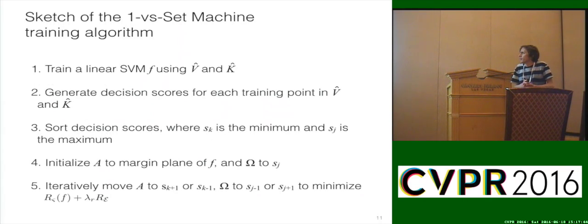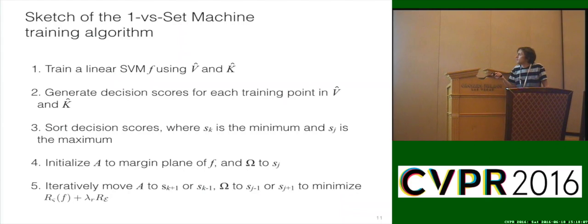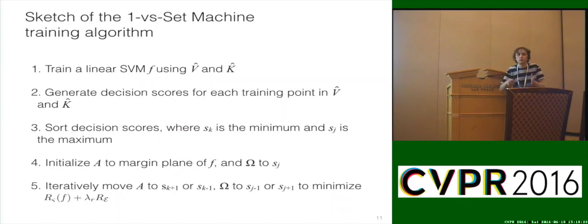A sketch of the algorithm: it starts by training a linear SVM using known training data — positives and negatives. Then we generate decision scores for each training point in both sets. We sort those scores where S sub K is the minimum and S sub J is the maximum. We initialize A to the margin plane of the original SVM model F, and initialize the back plane to S sub J. Then, in a greedy fashion, we iteratively move these planes to minimize open space risk plus any regularization constant on the empirical risk term.